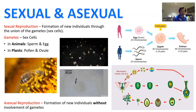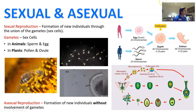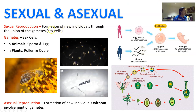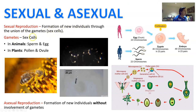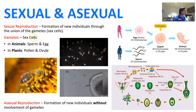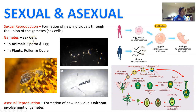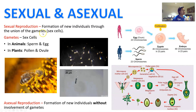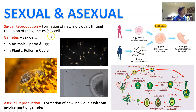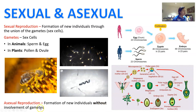Let's start by defining what is sexual reproduction. When we talk about sexual reproduction, we are talking about the formation of new individuals through the union of the gametes, which are your sex cells. A gamete in an animal is a sperm and an egg, and in a plant it is a pollen and an ovule. Asexual reproduction is simply formation of new individuals without the involvement of these gametes.